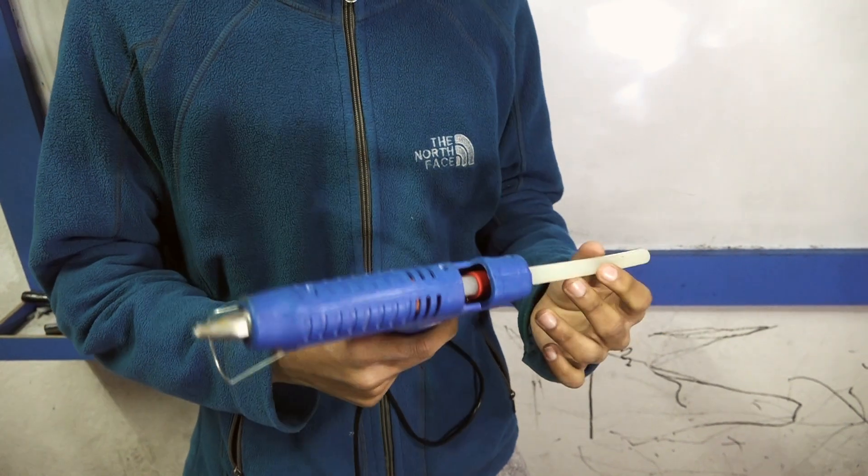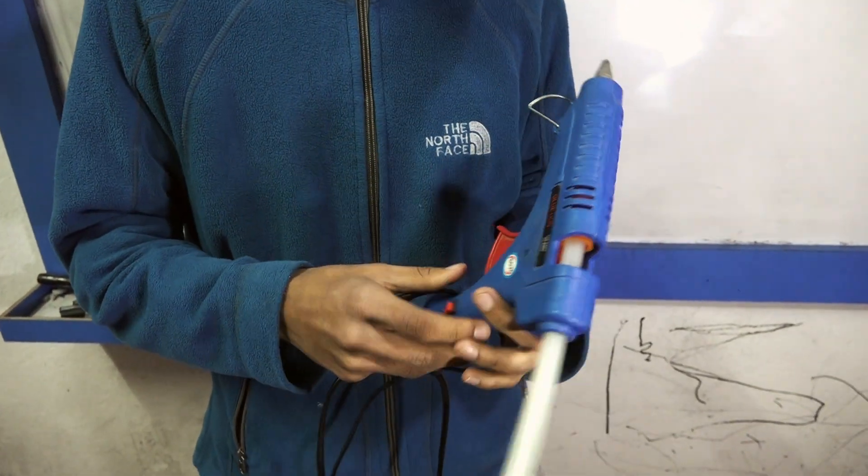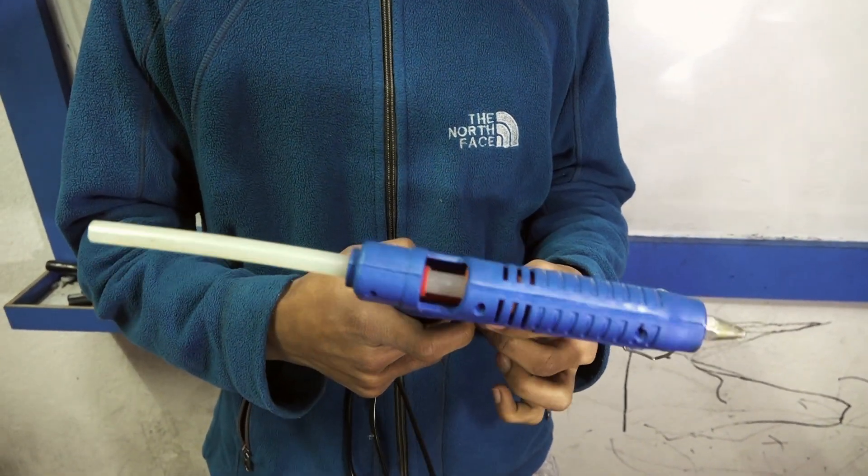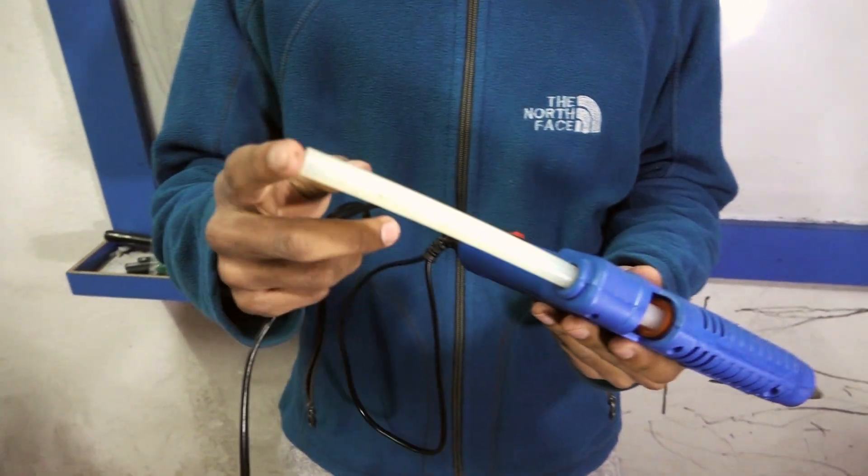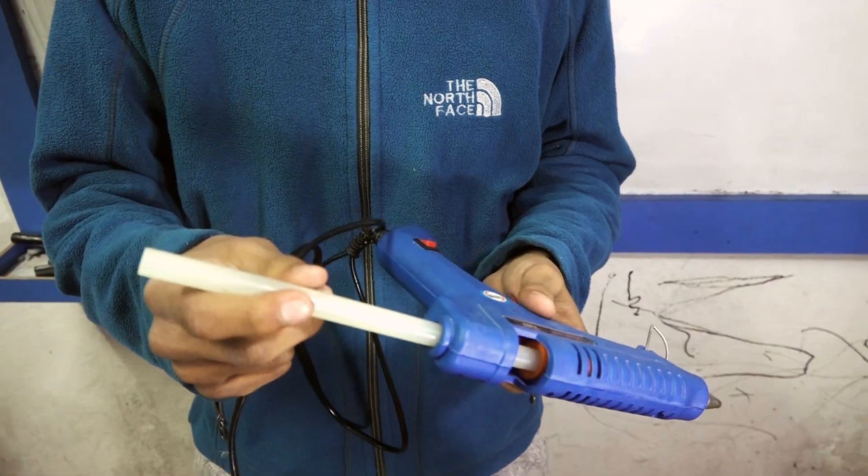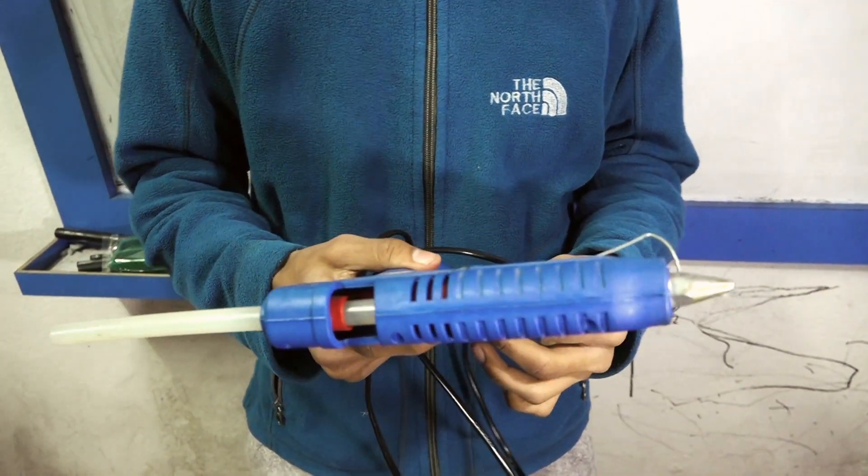So you will also need a hot glue gun so that you can be able to connect some parts strongly. So hot glue gun basically melts the stick and works as a glue.